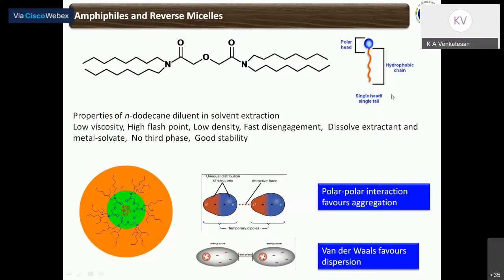Since TODGA is a neutral ligand and the chemistry of americium and lanthanides are quite similar, both metal ions get extracted into the organic phase. The problem is how we separate lanthanides from actinides, because transmutation of actinides requires the separation of lanthanides — lanthanides are regarded as neutron poisons which reduce the efficacy of actinide transmutation. The diglycolamide ligand can be regarded as a micelle with a polar head and a non-polar alkyl chain tail. This ligand is usually dissolved in n-dodecane for solvent extraction applications, chosen for low viscosity, high flash point, low density, fast disengagement, and good solubility of the extractant.